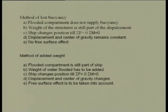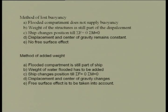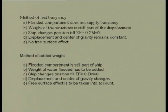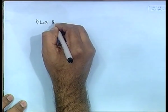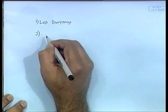Now we go into damage stability calculations. There are two main methods — please remember both names as they are very important, especially if you work in a shipyard where damaged ships frequently need assessment. The two methods are: (1) Method of Lost Buoyancy, and (2) Method of Added Weight.